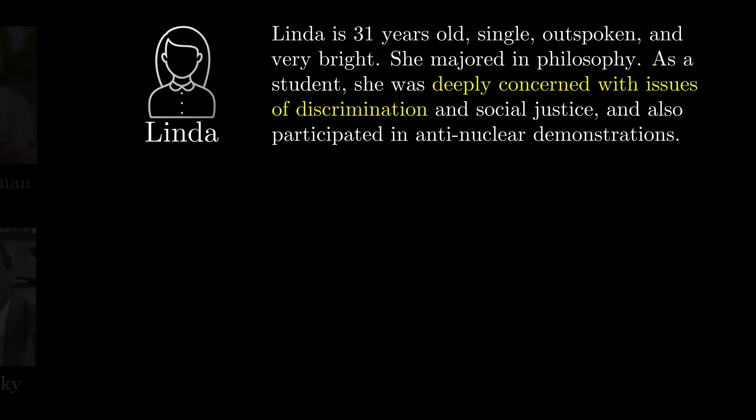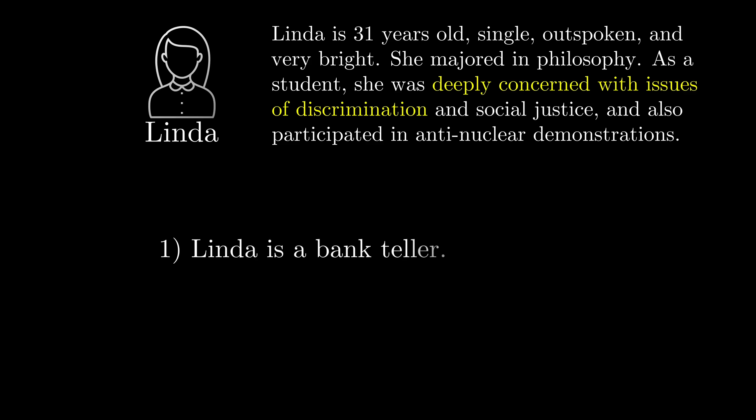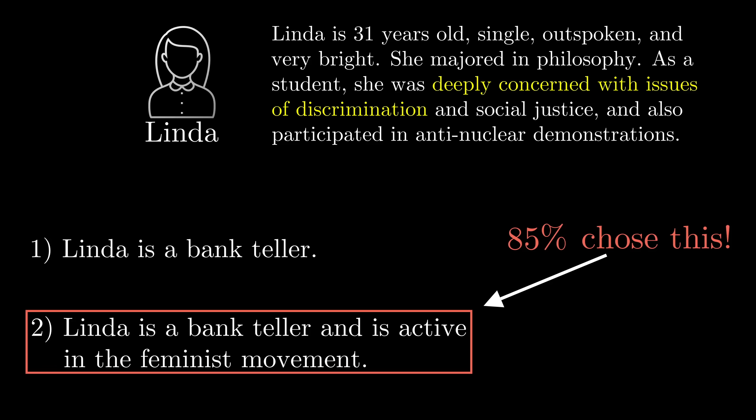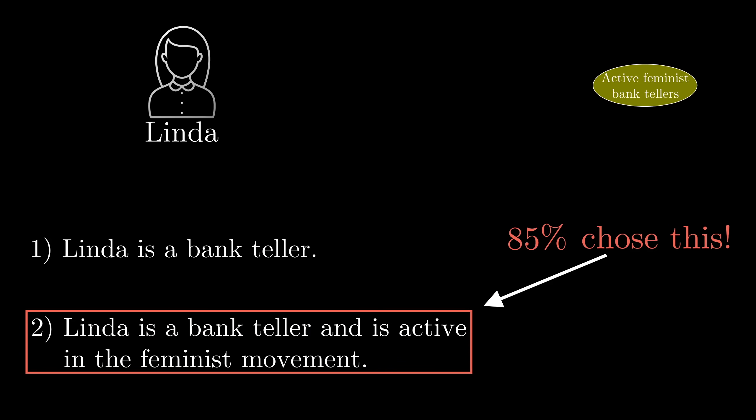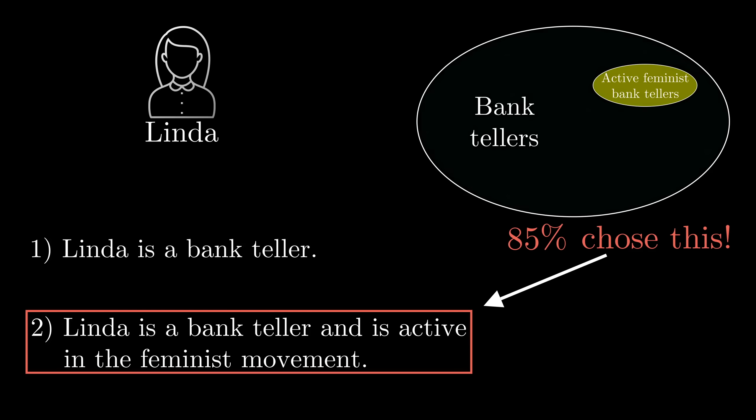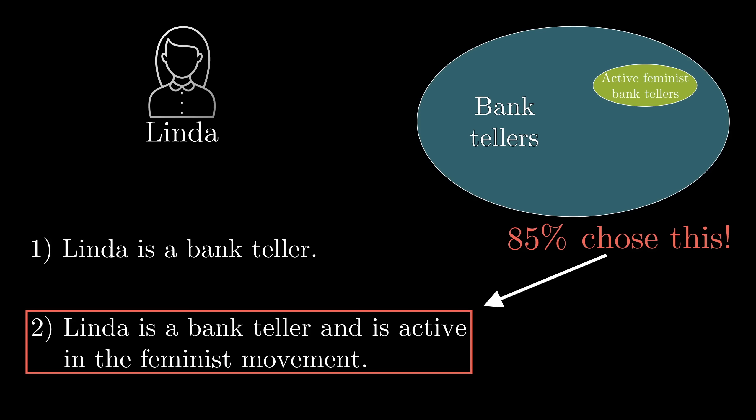After seeing this, people were asked what's more likely: one, that Linda is a bank teller, or two, that Linda is a bank teller and is active in the feminist movement. 85% of participants said that the latter is more likely than the former, even though the set of bank tellers who are active in the feminist movement is a subset of the set of bank tellers. It has to be smaller.